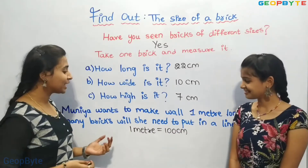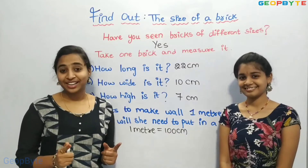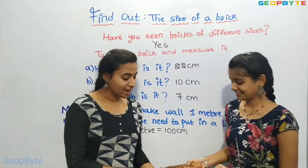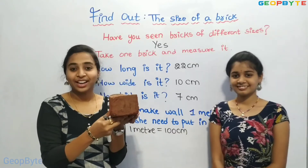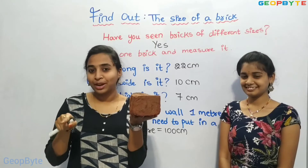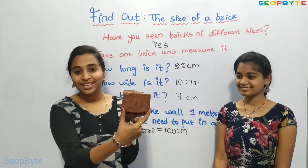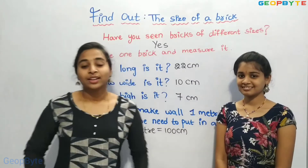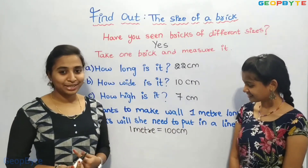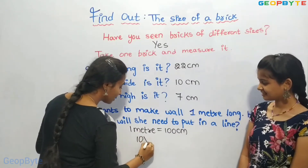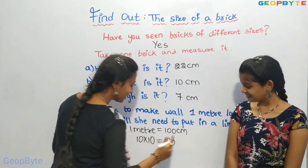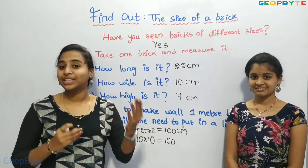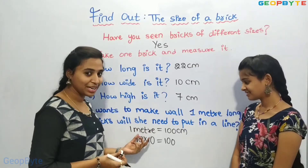So children, how many bricks will she need to put in a line? She will arrange the bricks one by one. This is the width of the brick — 10 centimeters. We have 1 meter equal to 100 centimeters. 10 centimeters into 10 bricks gives us 100 centimeters, that is 1 meter. So Muliya needs 10 bricks to make the wall.